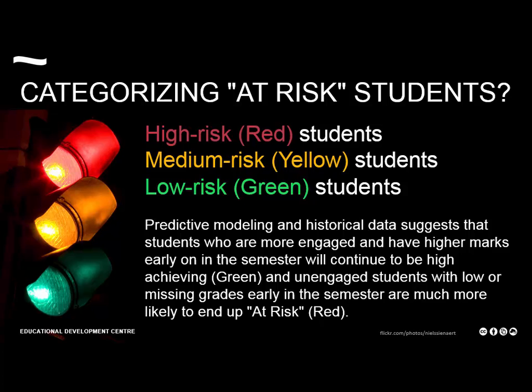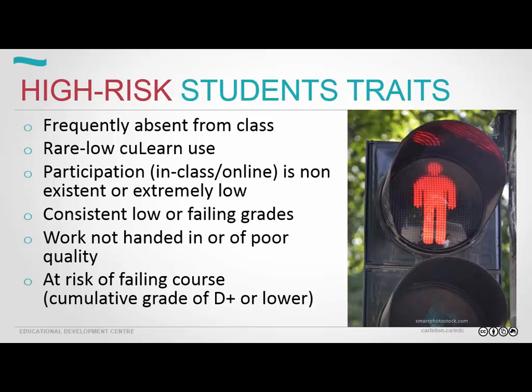Big jumps in student performance can be an indicator — either they're really pulling up their bootstraps, or they had a problem before, or they're now entering a phase where they might need some support. A high-risk student is frequently absent from class, has rare or low course access, low participation whether in class or online, lower or failing grades, and work potentially not handed in. Generally, a D-plus or lower is somebody who is at risk in your course.